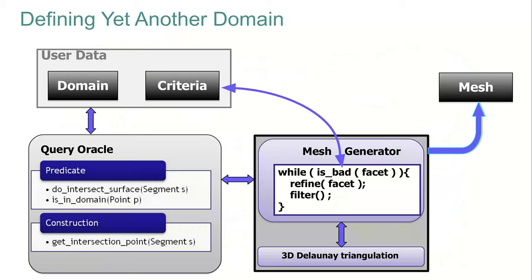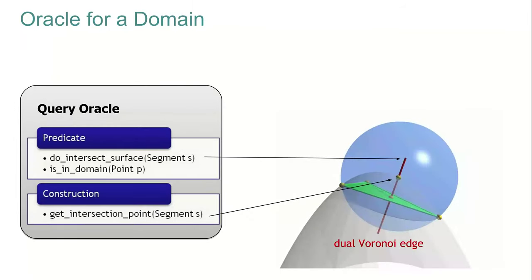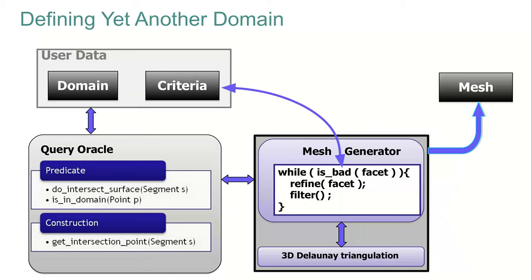CGAL provides several classes for meshing different kinds of input domains. But what if you are interested in yet another type of domain? The meshing procedure interacts with user data through two means: the quality criteria and the domain. The criteria indicate whether a facet or tetrahedron is bad. The domain is defined by answering whether a segment intersects the domain boundary, whether a point is in the domain, and by computing the intersection point of a segment with the domain boundary. With those user classes defined, the mesh algorithm can generate a mesh corresponding to the input data.